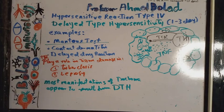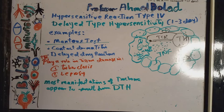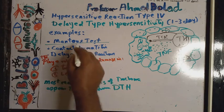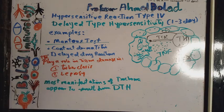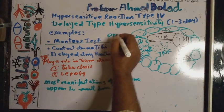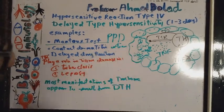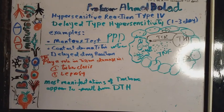An example of type 4 hypersensitivity reaction is the Mantoux test, which is a test for infection by tuberculosis. If a patient presents with a cough for more than 2 weeks and you want to diagnose TB, you may run this test. The basis of the test is that we inject purified protein derivative intradermally and ask the patient to come back at least after 1 or 2 days.